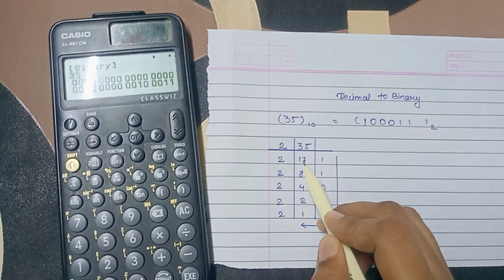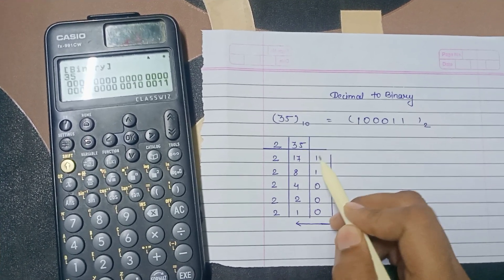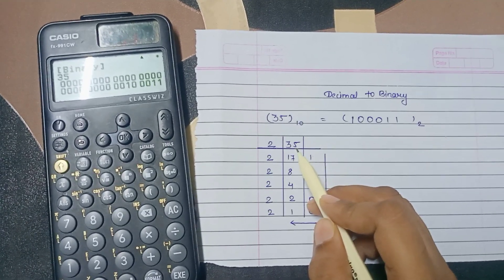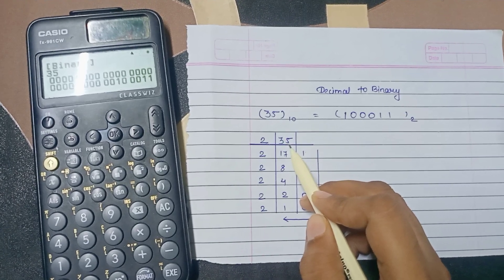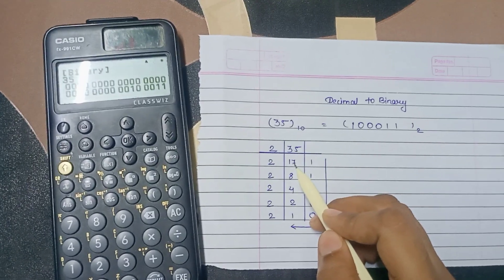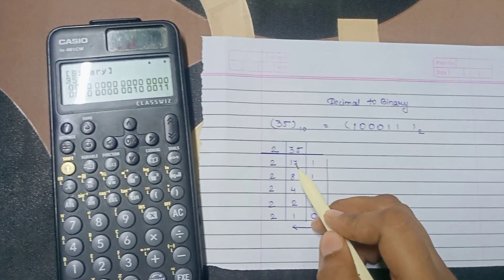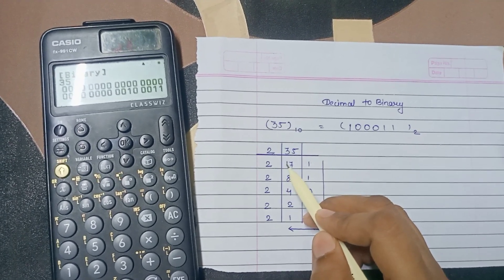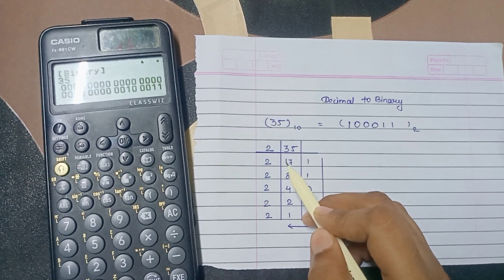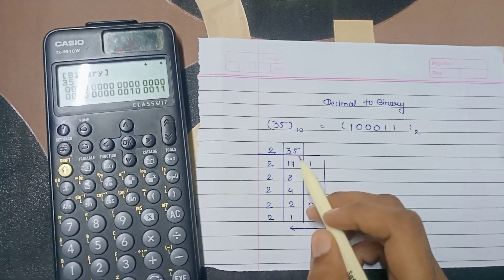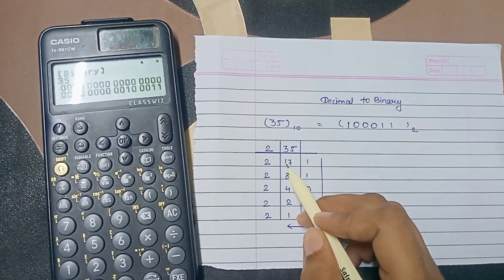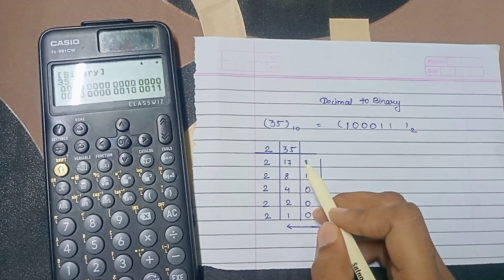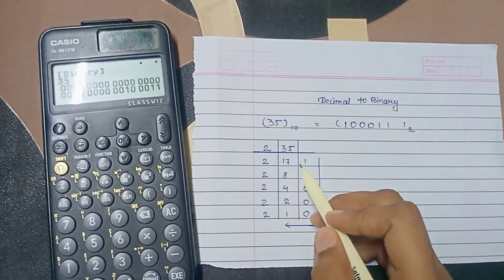2 is 17 remainder will be 1 as 35 is not evenly divisible by 2 but 34 is evenly divisible by 2. So 34 is divisible 17 times. So here we will write 17 and 1 is remainder from 35.